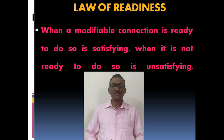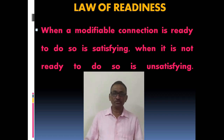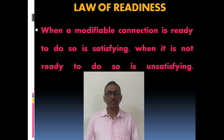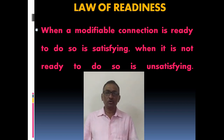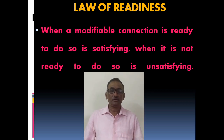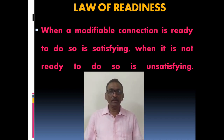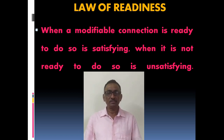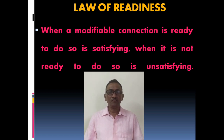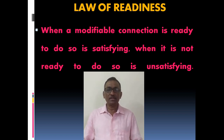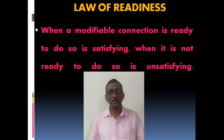From this experiment, he derived three primary laws and five subordinate laws in learning. The three primary laws are law of readiness, law of exercise, and law of effect. According to Thorndike, law of readiness means when a modifiable connection is ready to do so, it is satisfying, and when it is not ready to do so, it is unsatisfying. That means when the child is ready to learn, he learns quickly, effectively, with greater satisfaction than when he is not ready to learn.